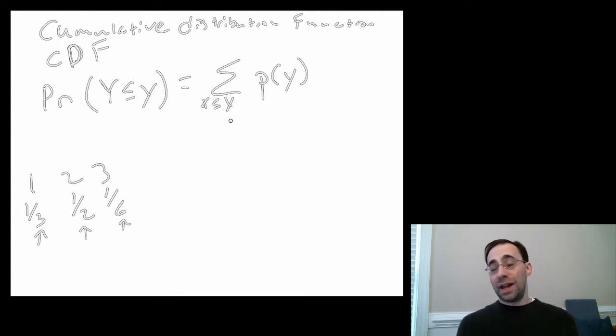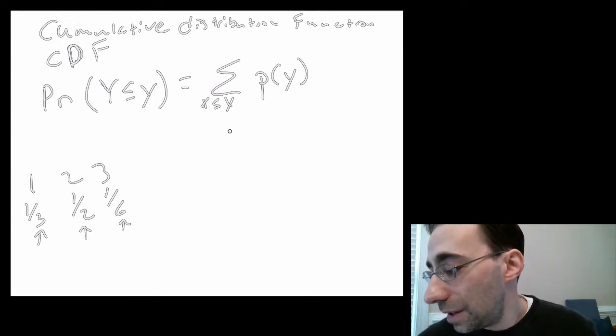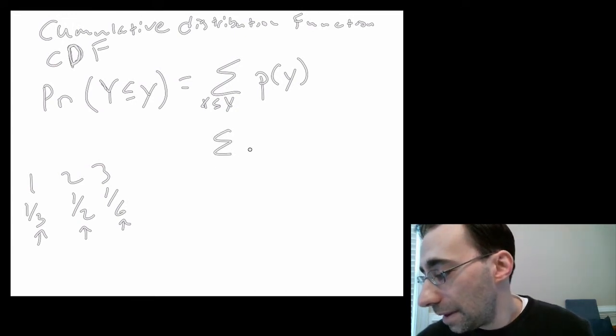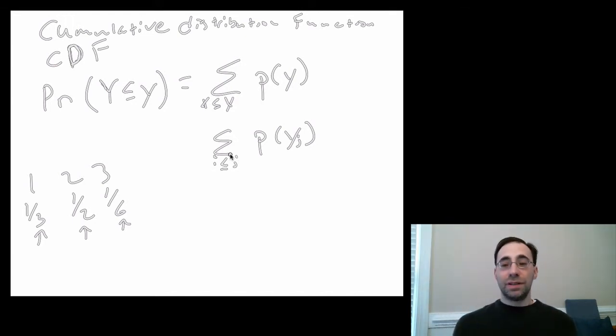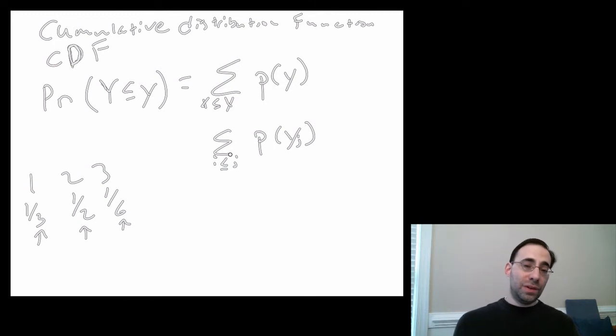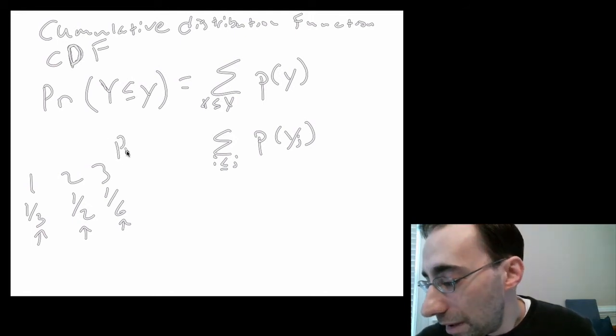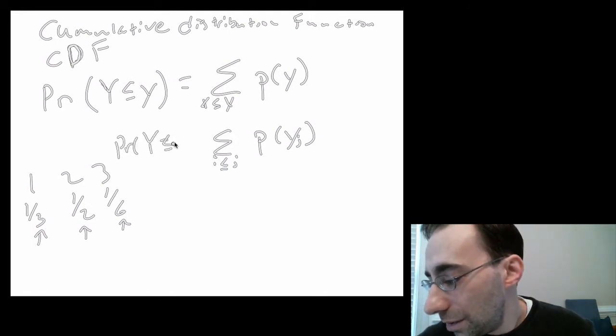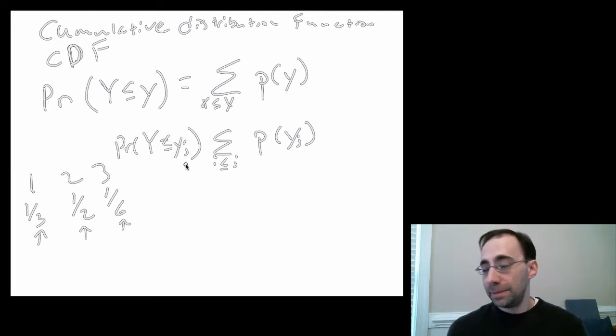When you do this, and if you index the different categories, then you can also write this for some particular value yj as the sum of all i is less than or equal to j. So if j is 3, then you add, say, 1, 2, and 3, y1, y2, and y3 to get that probability. If this is the probability that y is less than or equal to yj for some j. So this is the CDF. The CDF, again, goes from 0 to 1.